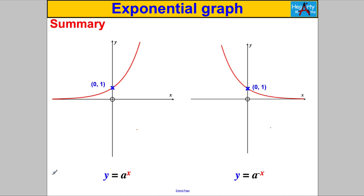Here's the summary: for a > 1, the graph y = a^x looks like an increasing exponential curve, always passing through (0, 1) — because anything to the power of 0 is 1. If a > 1, then the graph y = a^(-x) is a reflection of y = a^x in the y-axis. For example, y = 2^x and y = 2^(-x) are reflections of each other in the y-axis.